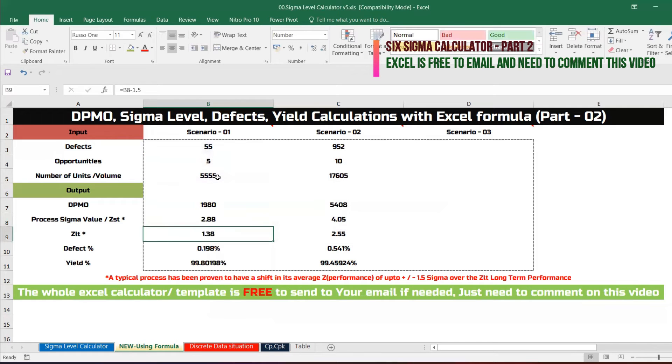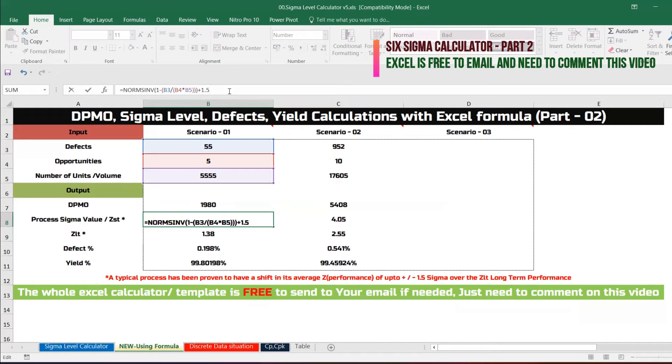Short term we need to add 1.5 shift. Each shift in six sigma is 1.5. So I'm going to add it, so this is 4.38.